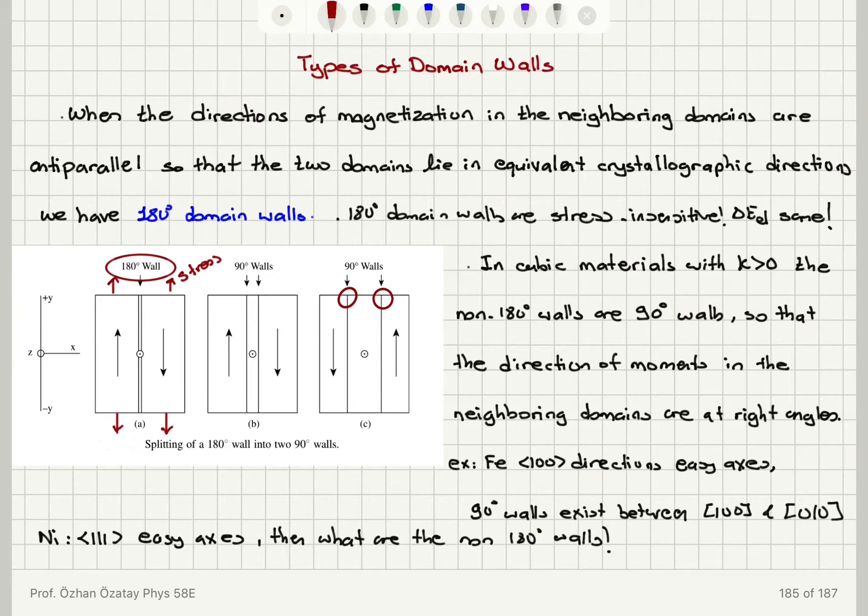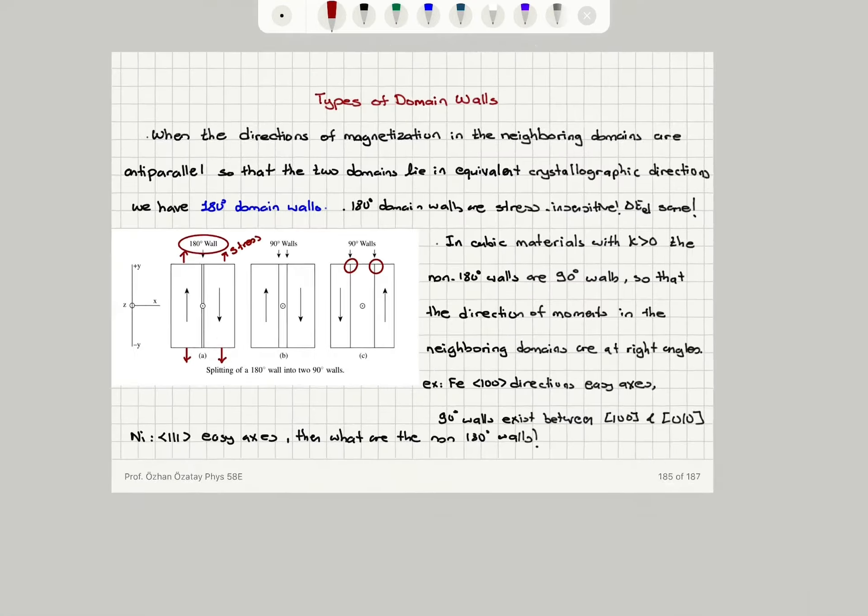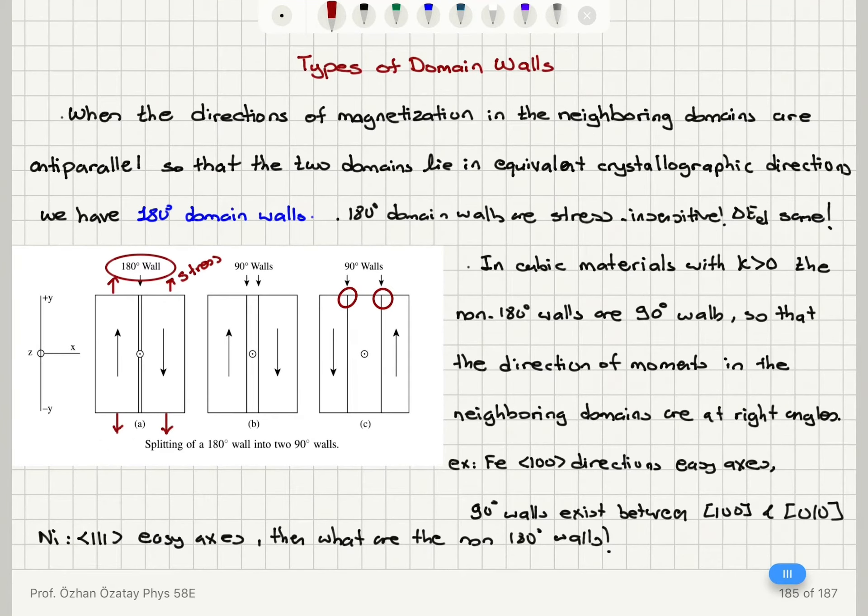In cubic materials with positive anisotropy, the non 180 degree walls are 90 degree walls. Here you can see a 180 degree domain wall breaking into two 90 degree domain walls, so the magnetization basically rotates to be perpendicular to the domain that is neighboring it, and so the neighboring moments are at right angles.